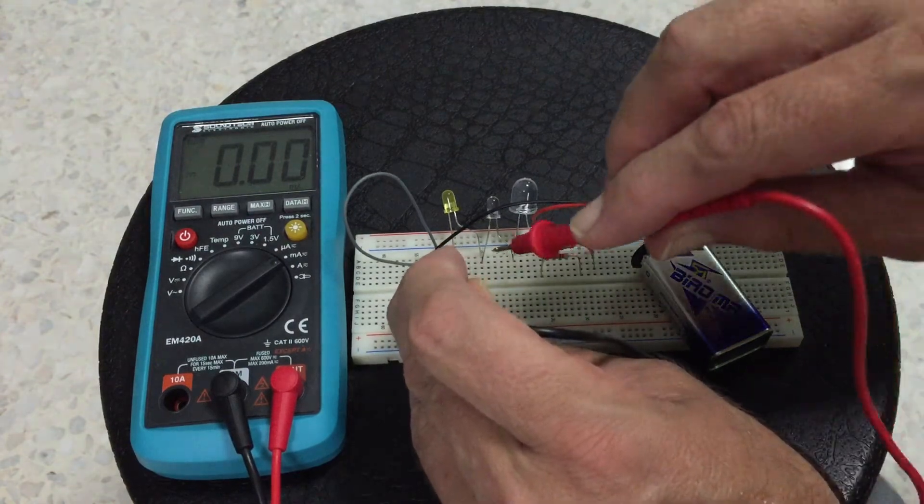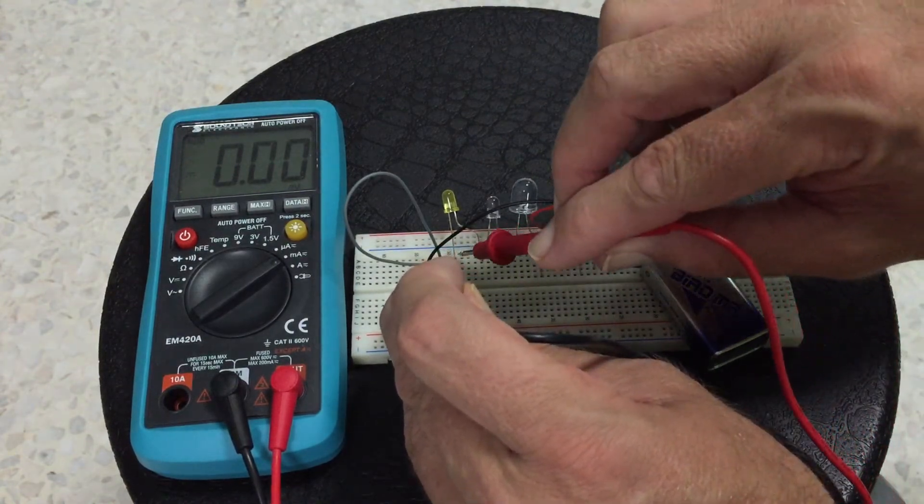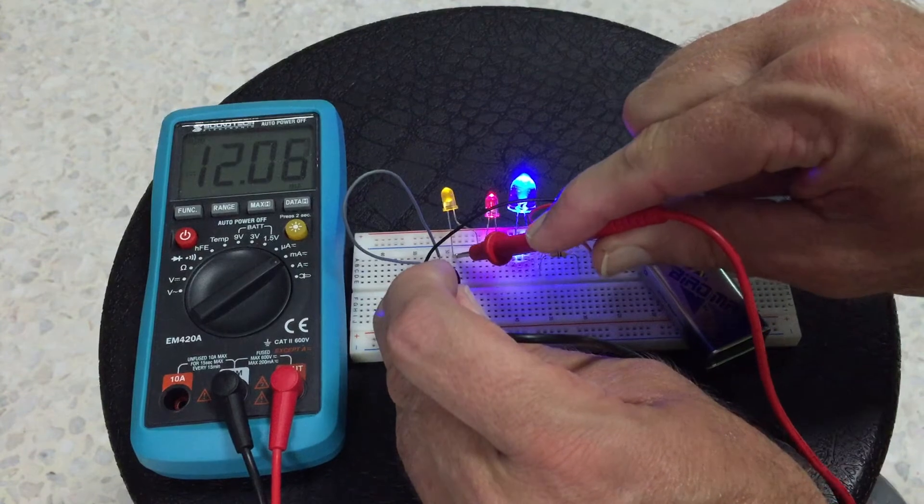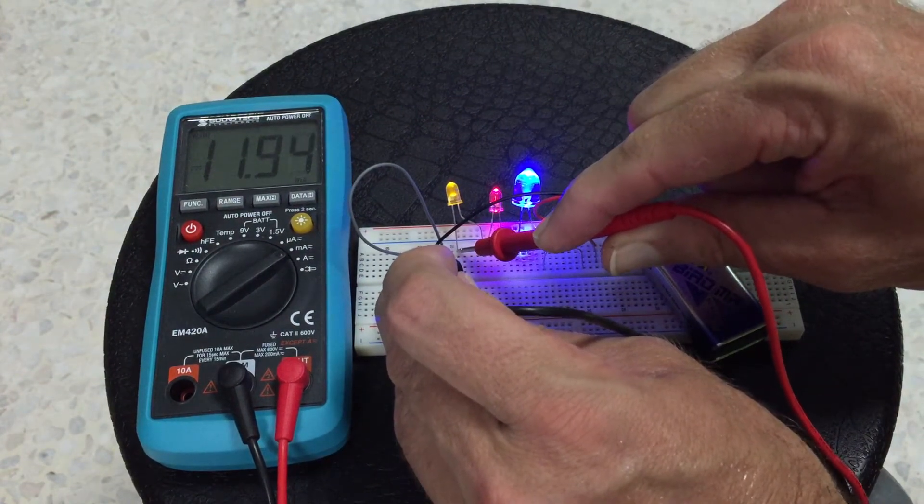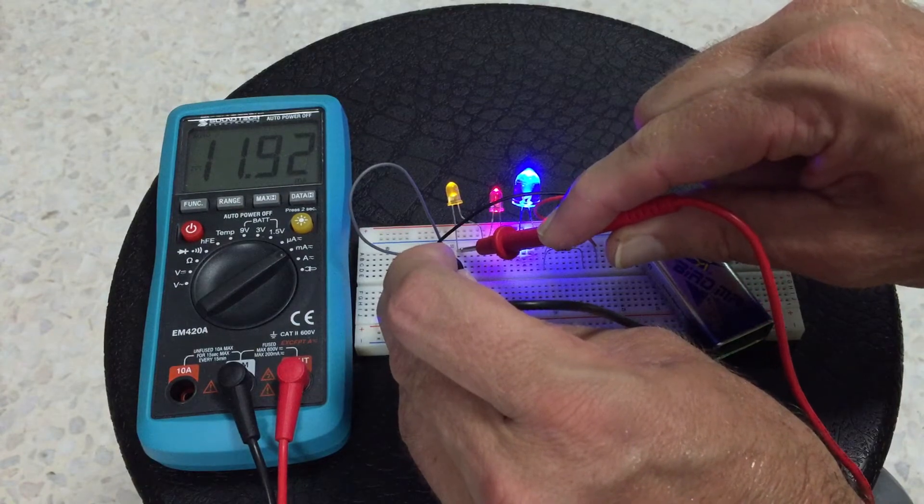So we have one negative wire, one positive wire and we have fixed the circuit with our meter and it says we have about 12 milliamps flowing through the circuit.